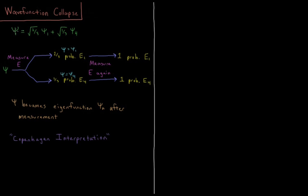So let's assume that I have a wave function which has a coefficient times eigenfunction 1, psi 1 of the Hamiltonian, plus square root 1 over 3 times eigenfunction psi 4, the fourth eigenfunction of the Hamiltonian operator.